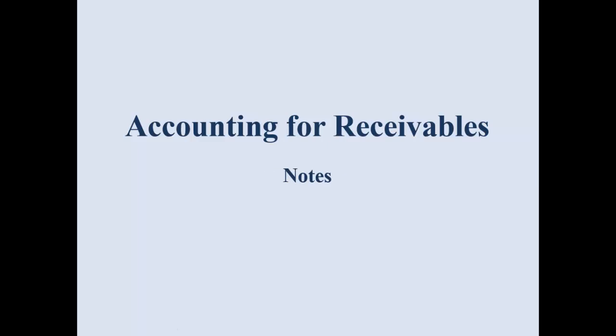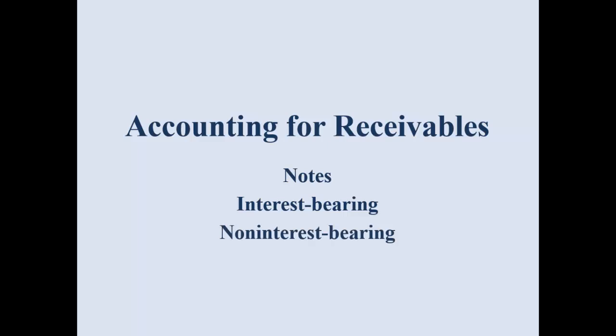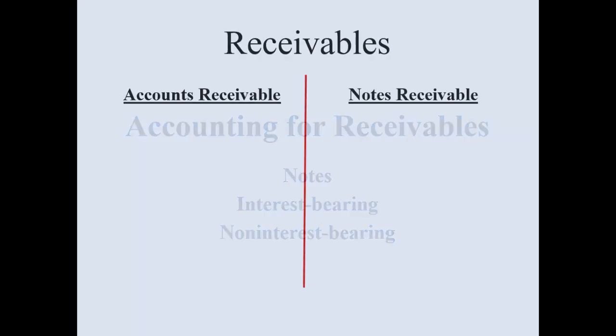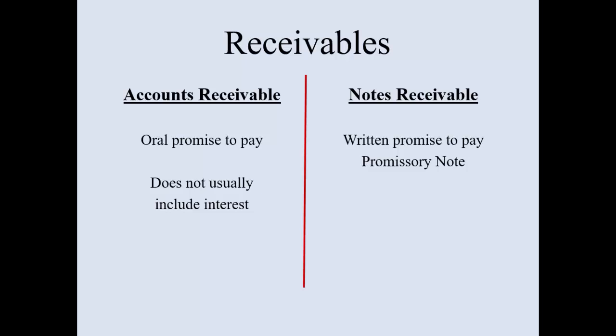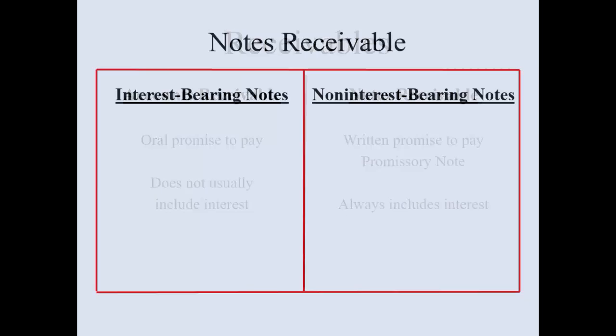We're going to look at another concept in notes receivable — whether it bears interest or not. You may hear interest-bearing notes and non-interest bearing notes. What is the difference between accounts receivable and notes receivable? An accounts receivable is an oral promise to pay, while a notes receivable is a written promise to pay where you sign a promissory note. Accounts receivable doesn't usually include interest, but a note will always include interest.